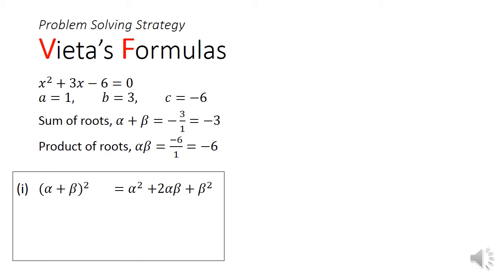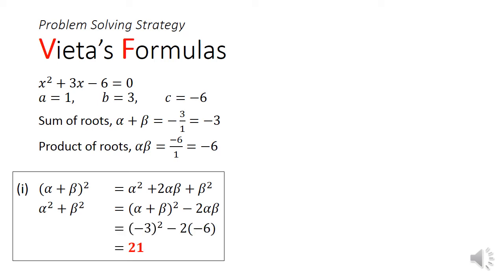For part 1, to find the sum of squares of roots, we consider the square of the sum of roots. Alpha plus beta squared equals alpha squared plus 2 alpha beta plus beta squared. Rearranging, we get alpha squared plus beta squared to be equal to the sum of roots squared minus 2 times the product of roots. Substituting the numbers in, we will get 21.